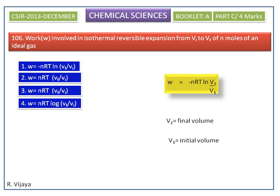So, replace V2 and V1 by VF and VI respectively. The equation becomes W is equal to minus nRT ln VF divided by VI.